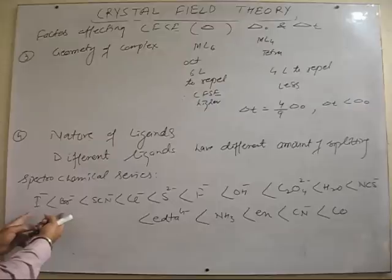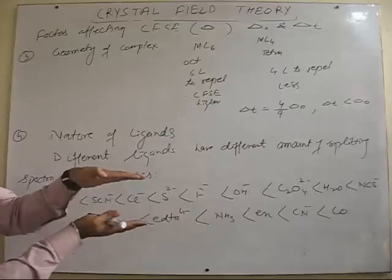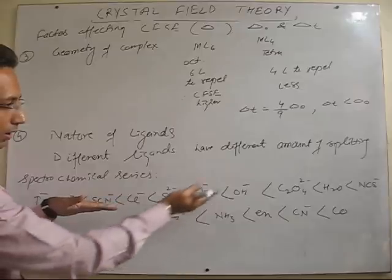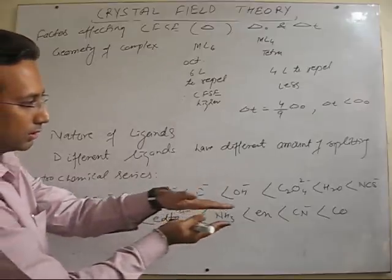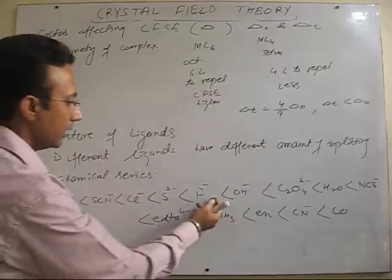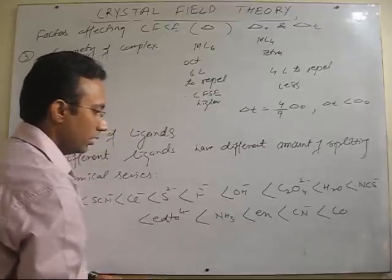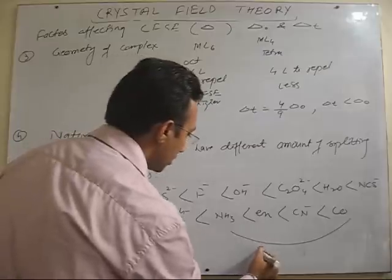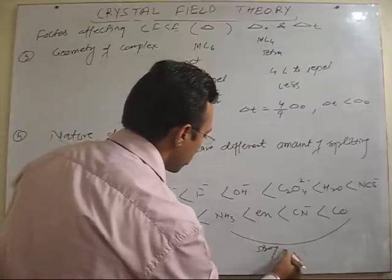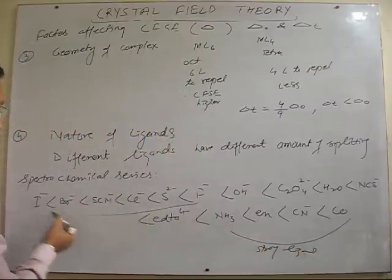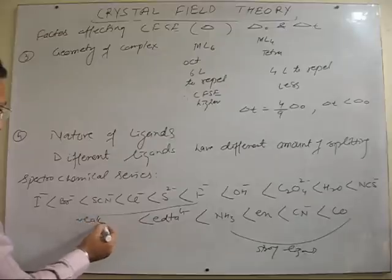This series shows that in general, halogens are towards the end of the series. I negative, for example, Br negative, they have very less splitting. But as you go towards the other end of the series, you see that the crystal field splitting goes on increasing as the ligand changing in this direction. So, these ligands are considered as a strong ligand in general, strong ligands, and somewhere here are considered as a weak ligand.